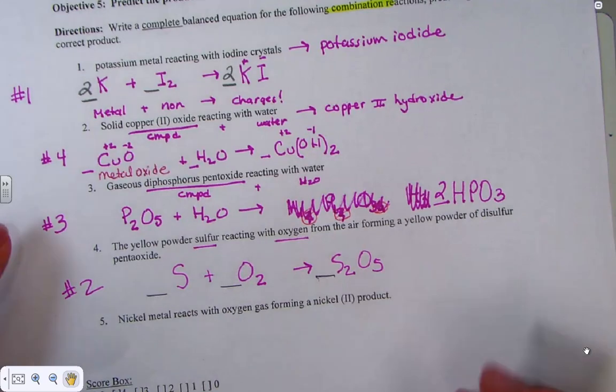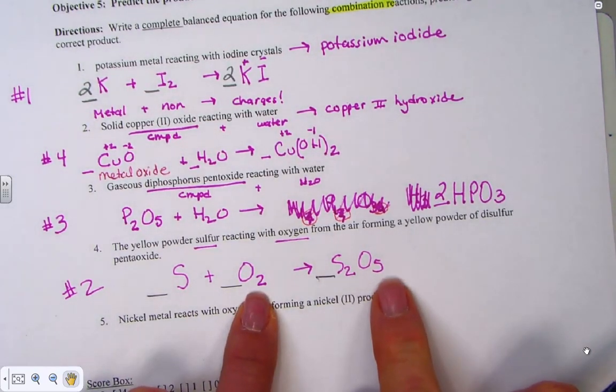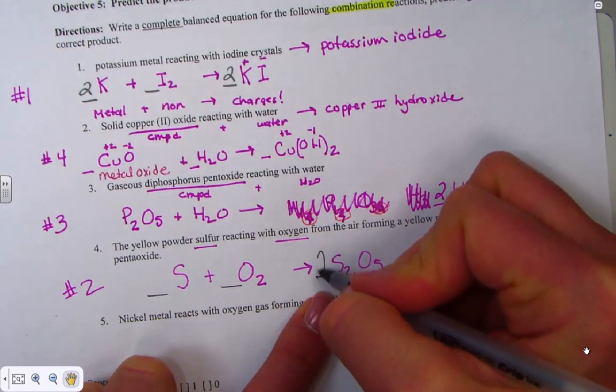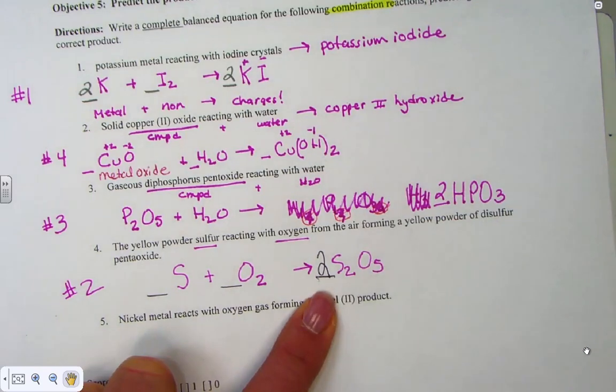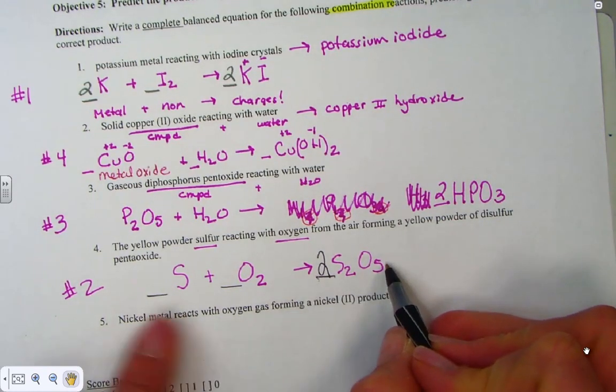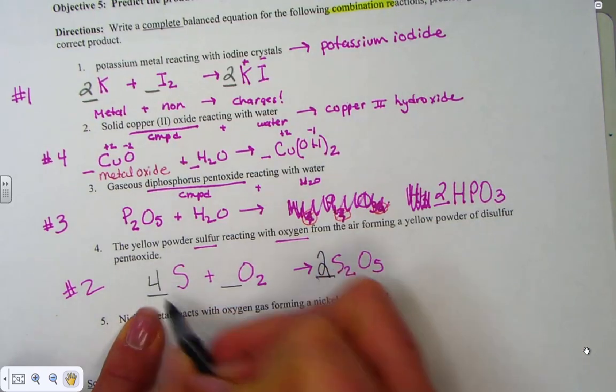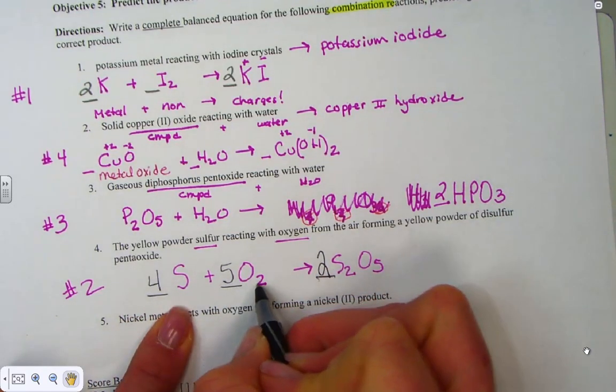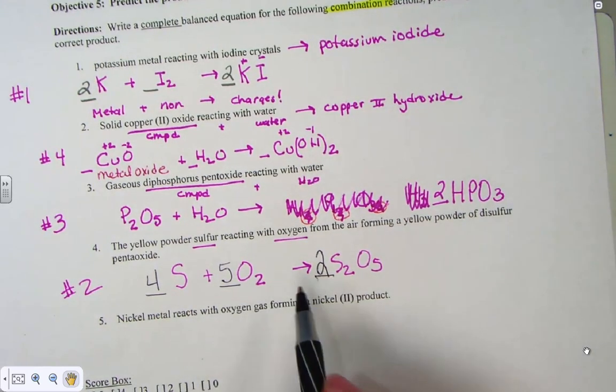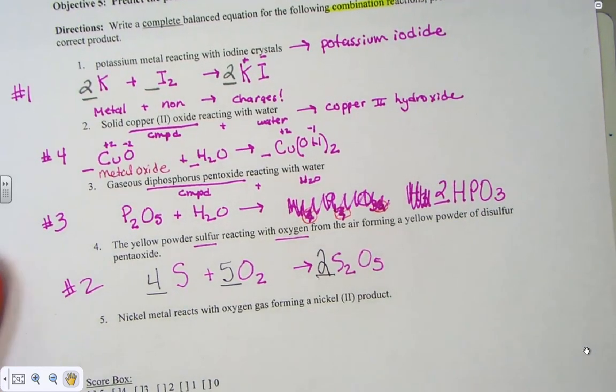What's left to do is to balance. And when we balance, I'm noticing odd number of oxygens on the right and an even number on the left. The old trick of double the odd number and things will fall into place. Doubling the product gives me 4 sulfurs and a total of 5 times 2 or 10 oxygens. A 4, 5, 2 balances that equation.